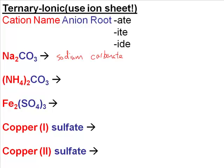So all you need is that ion sheet and you'll be able to name a ternary ionic compound. Some people memorize it, but you don't have to memorize it — you always have it with you.